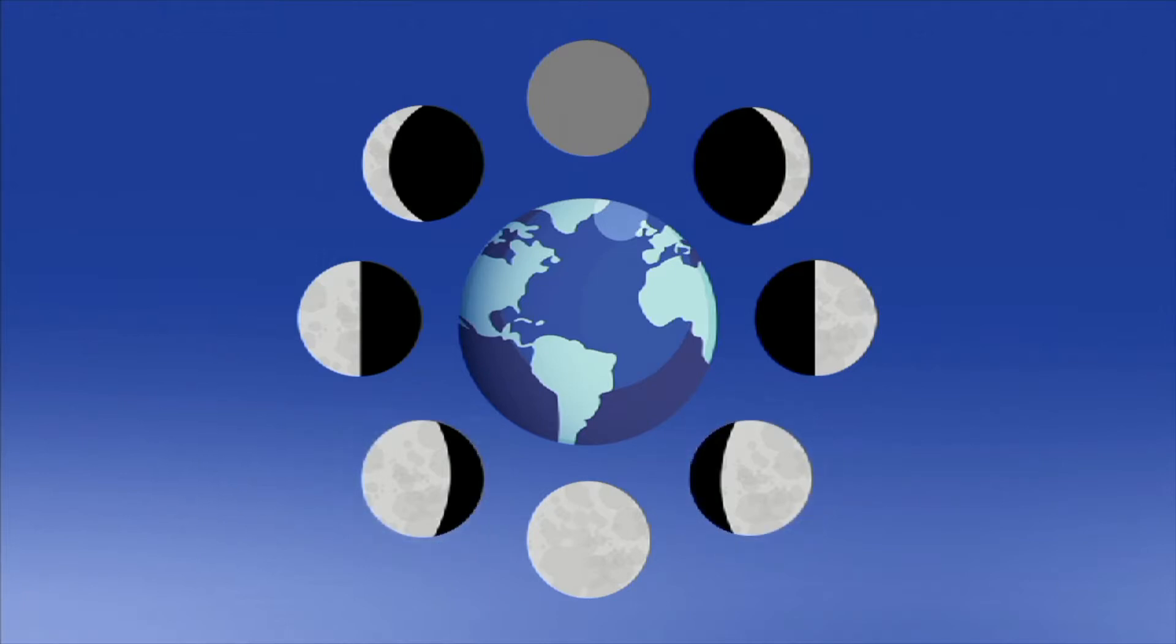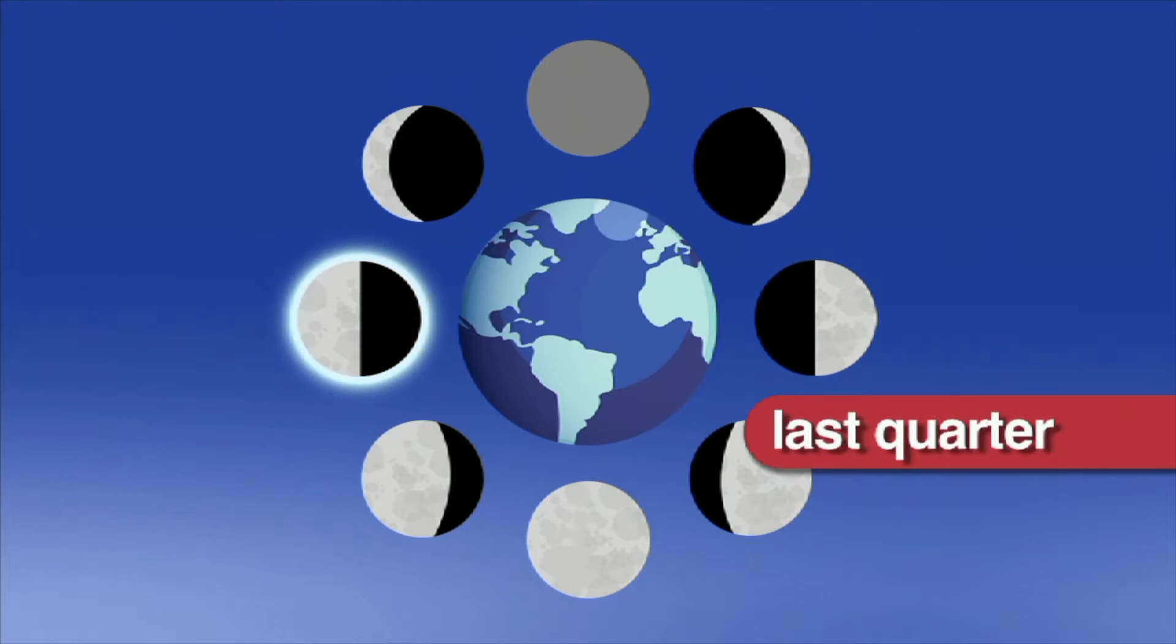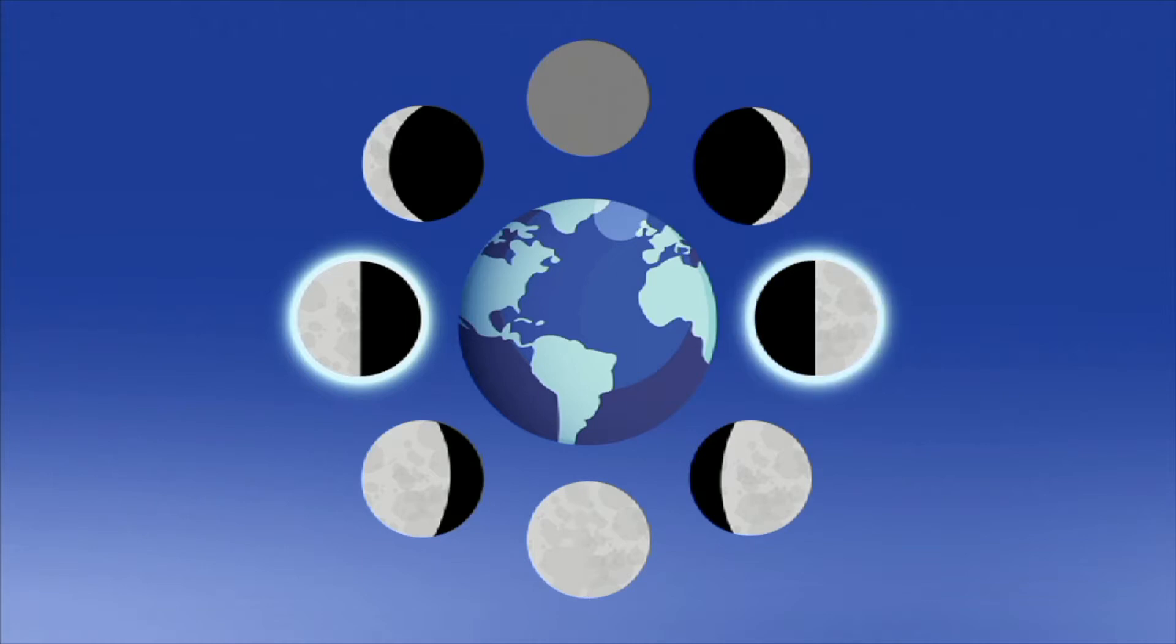After waning gibbous, the moon reaches the last quarter phase. This happens when the moon is three quarters of its way around the Earth, and the moon appears to us as half. The last quarter looks like the first quarter, except it's waning, or getting smaller.